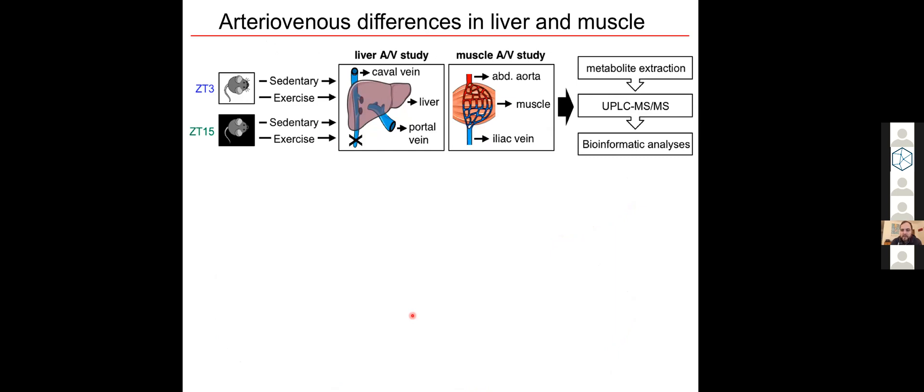As you can imagine, this was a very technically challenging experiment to perform. We were very grateful for the expertise of Jens Holst's team from the University of Copenhagen who were able to help us with this. Mice were anesthetized after their exercise or their sham exercise bout. And the blood was sampled directly from the blood vessels that are feeding these tissues, either from the portal vein which drains the gut to the liver, or from the abdominal aorta which is bringing blood to the hind limb muscles.